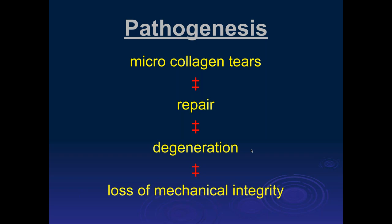In order for repair mechanisms to work, you have to have blood flow. If you have limited blood flow, it impairs repair, and therefore those are the areas where you're most likely to get degenerative change. This is a pattern seen throughout the body.